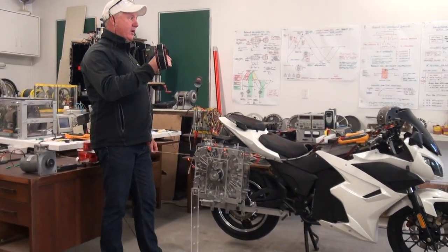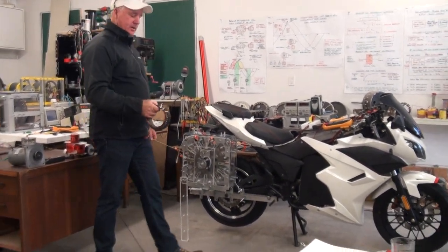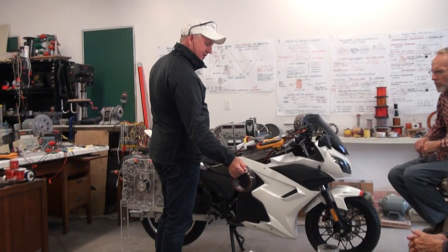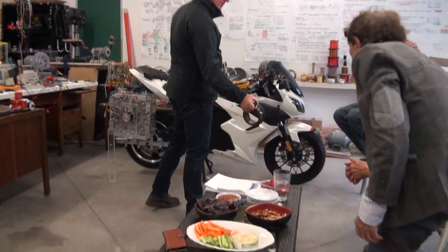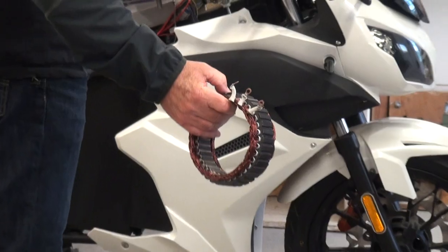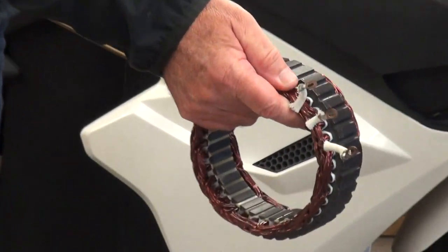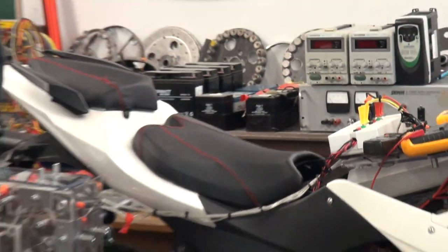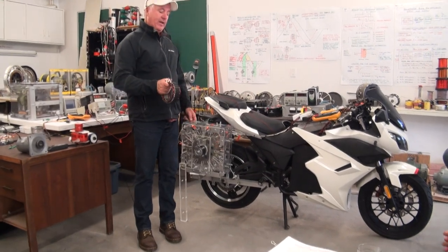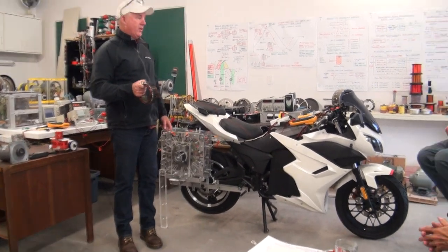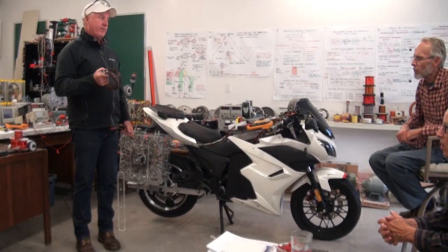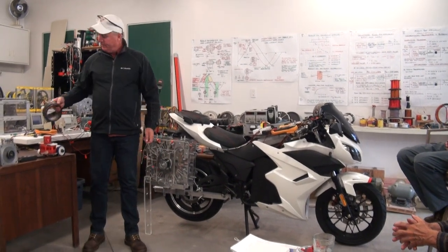This is a coil out of a car alternator. You can see basically how it's wound — there are gaps in it and so on, you can see through it. It's efficient, but you'll never get this coil to operate as a regenerative acceleration coil, no matter how high the frequency is.